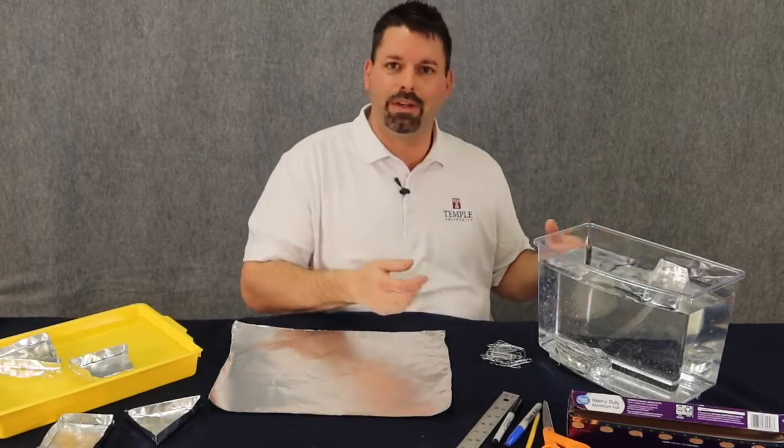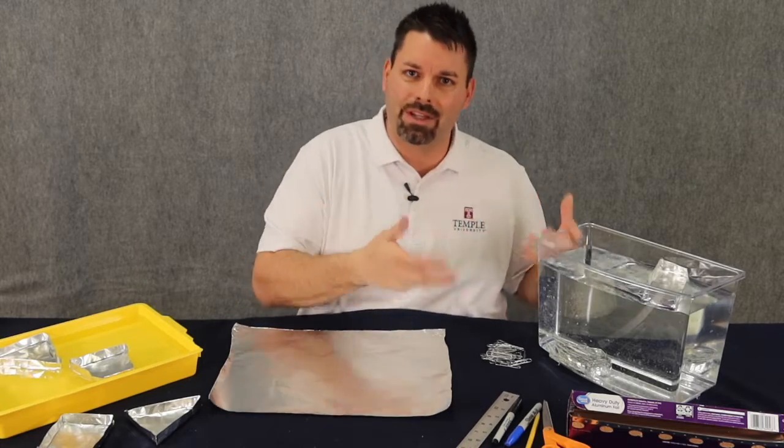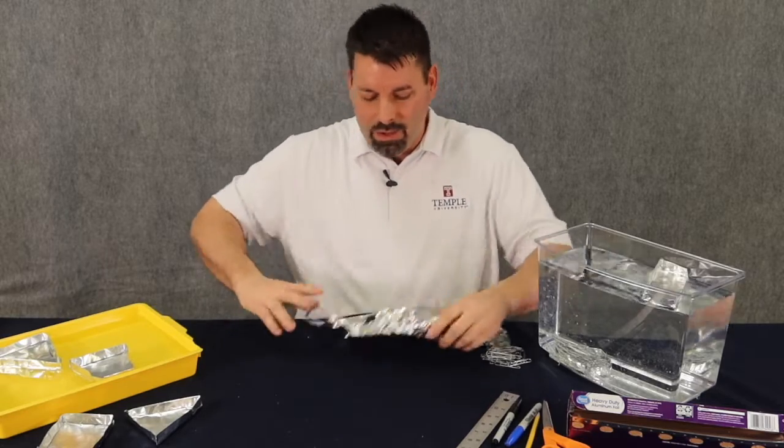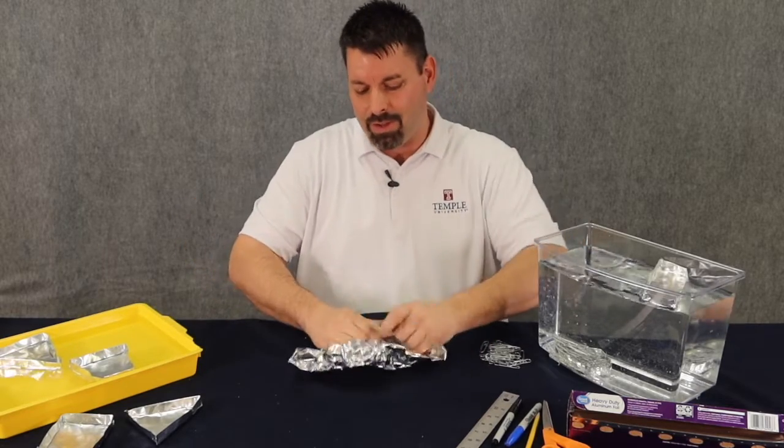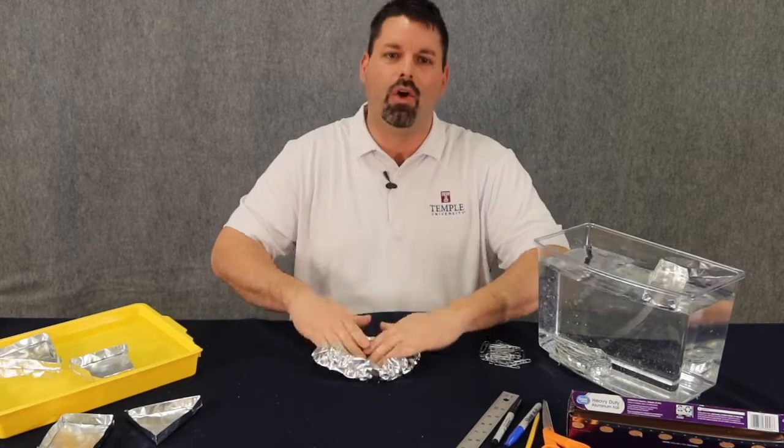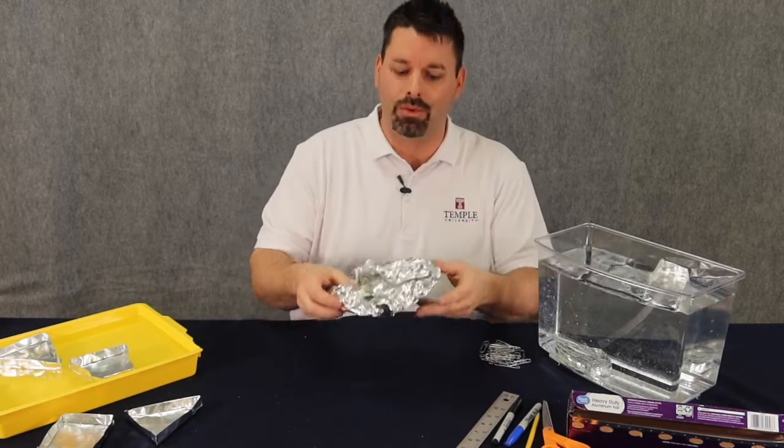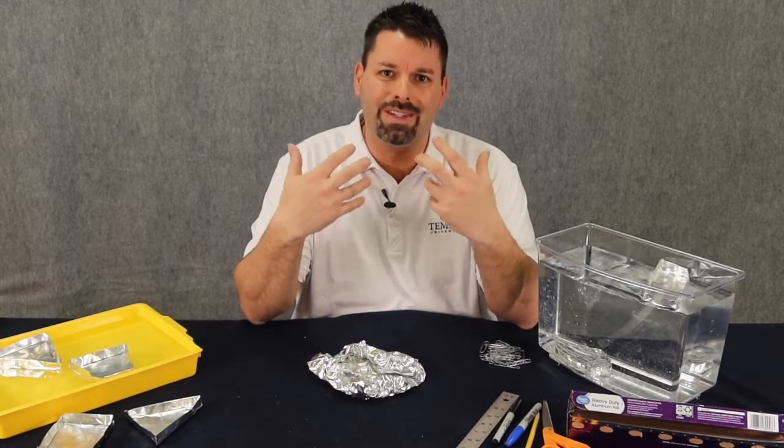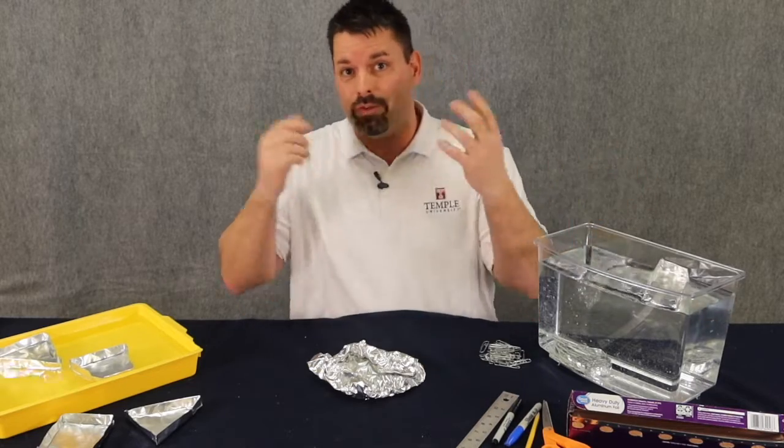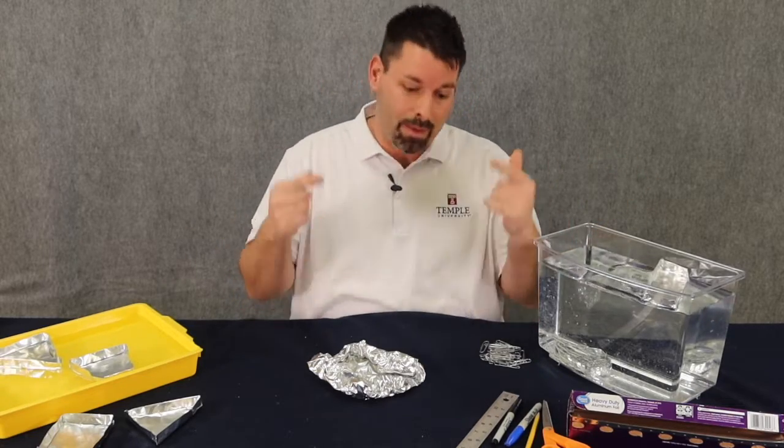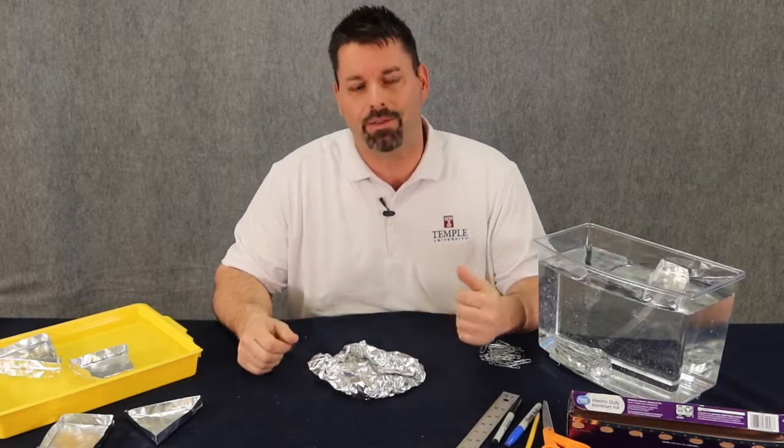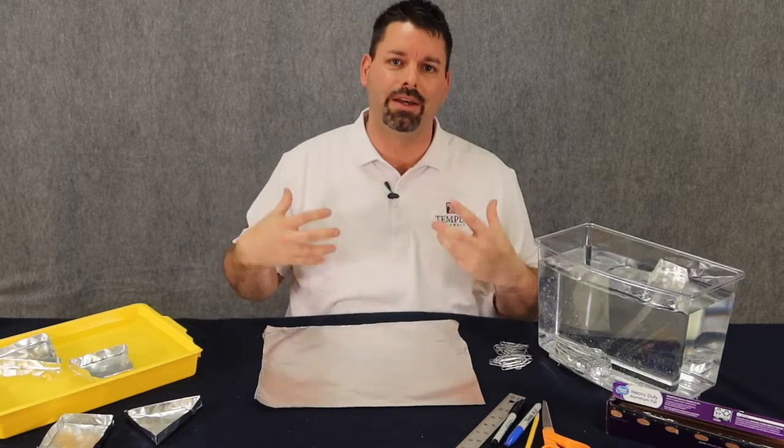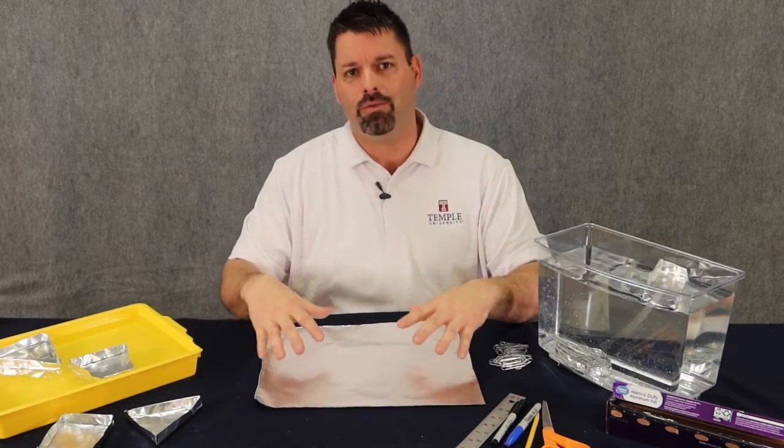Now the problem with that STEM activity is that there's really not a lot of design that goes into making the boat. You would just take a piece of aluminum foil and try and sculpt it into something that might actually hold paper clips or pennies or marbles, and usually you get something that looks like a crumbled mess. So we wanted to set out and see if we could design a very specific boat in different shapes and different sizes and improve this aluminum foil boat activity. Engineers who design and build boats use a lot of science and math, and we wanted to bring some of that science and math to our aluminum foil boat activity.